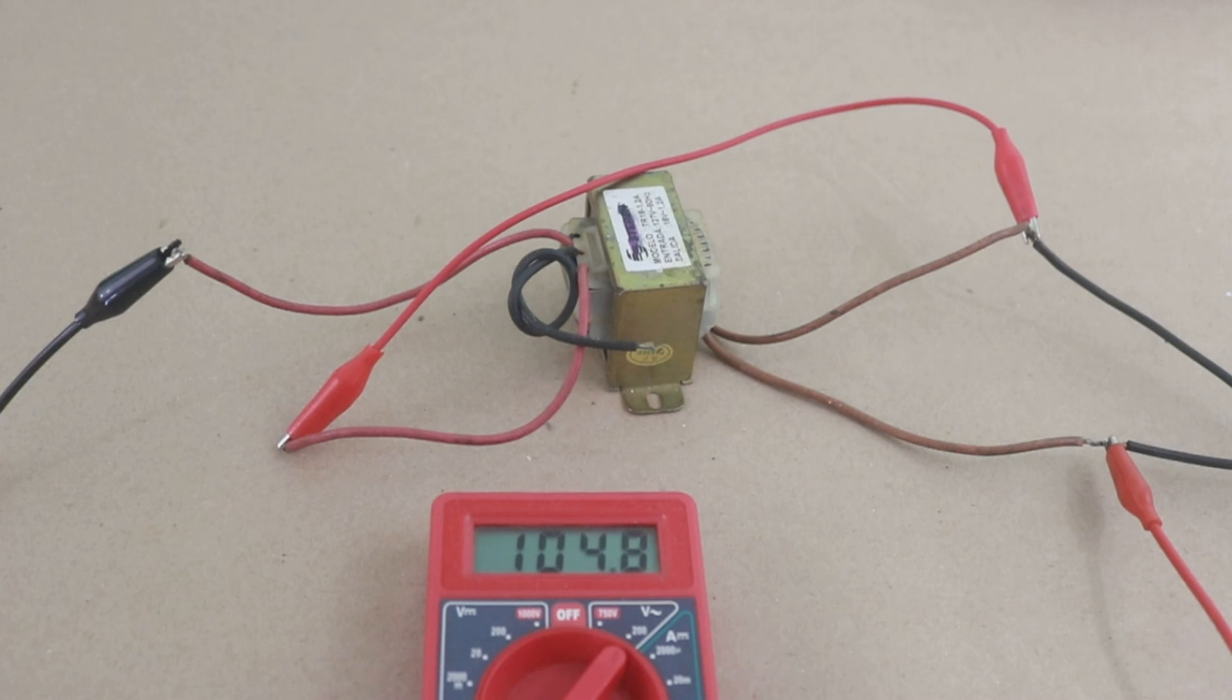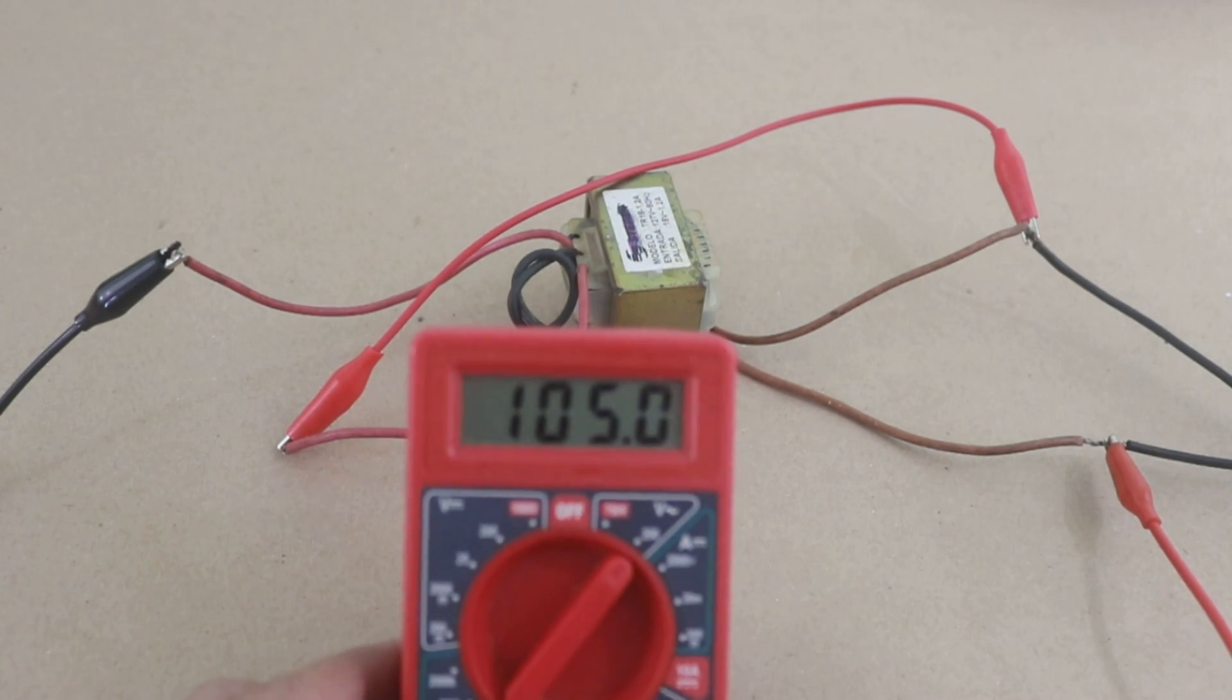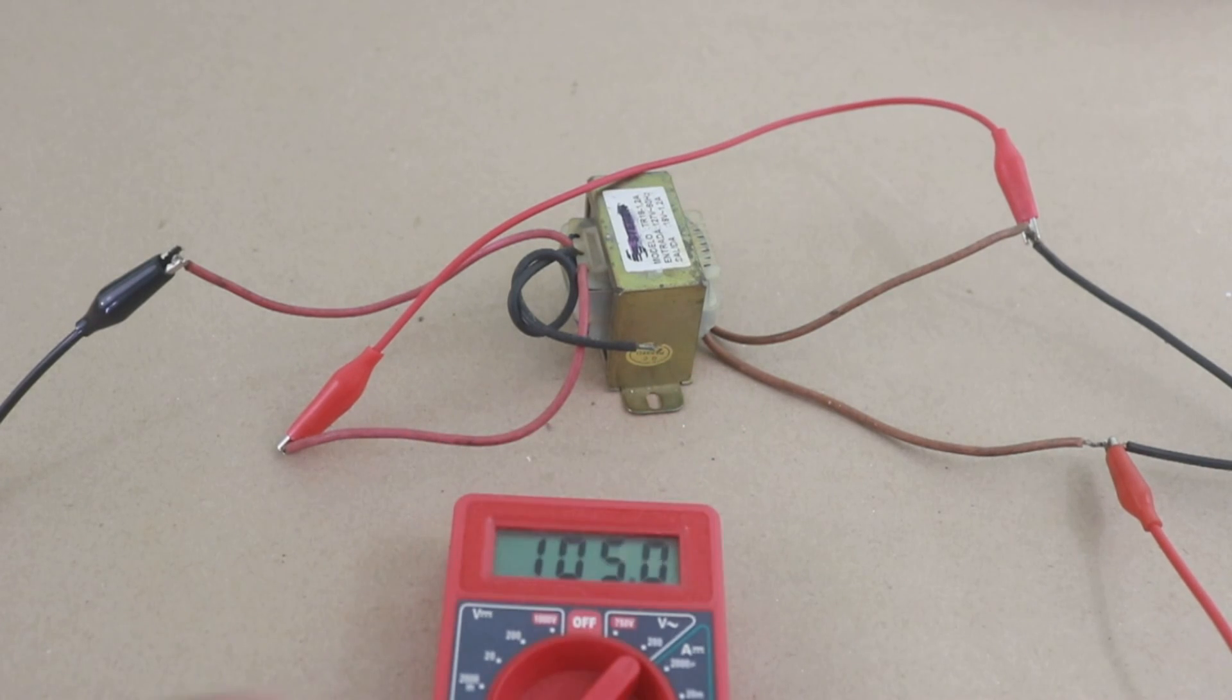Now we changed the connection from this point to the other in the secondary coil and now the voltage is 105 volts that is the difference of the two voltages.